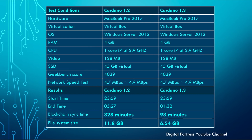The test conditions: I used a MacBook Pro 2017, virtualized with VirtualBox, running Windows Server 2012. I gave each virtual machine four gigabytes of RAM, one core i7 at 2.9 gigahertz apiece, 128 megabyte shared video, and 45 gigabytes of virtualized SSD apiece. I ran Geekbench on both machines and got an identical score of 4039. Network speed tests came out to 4.7 to 4.9 megabits per second — both sharing the same network connection. So these are less than optimal conditions.